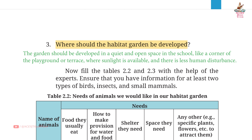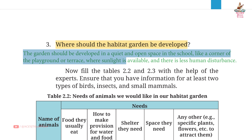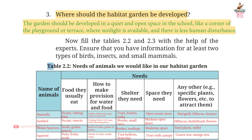Question 3: Where should the Habitat Garden be developed? Answer: The garden should be developed in a quiet and open space in the school, like a corner of the playground or terrace, where sunlight is available and there is less human disturbance.